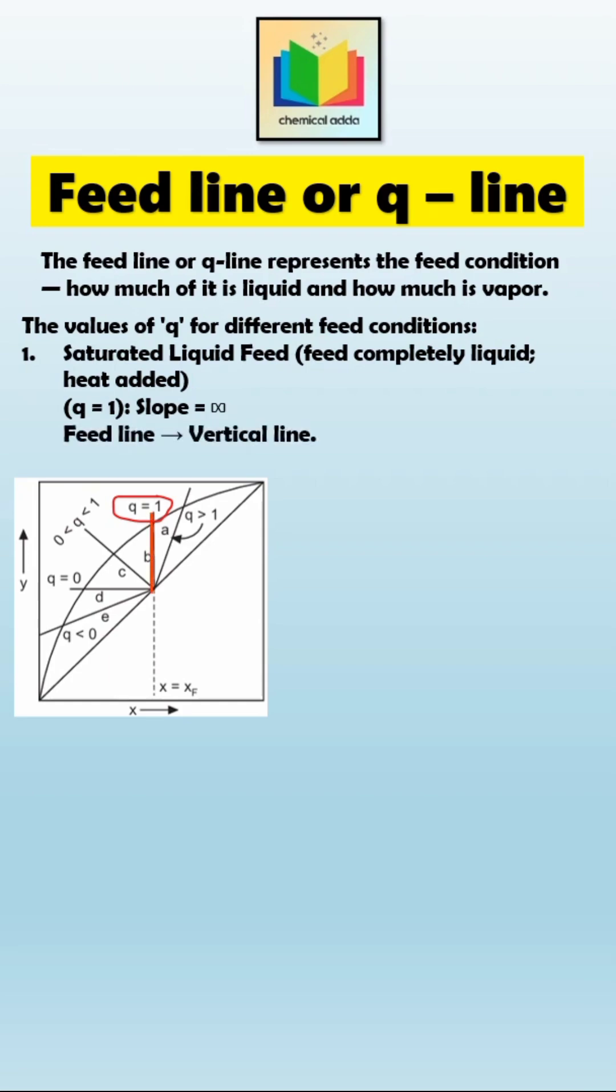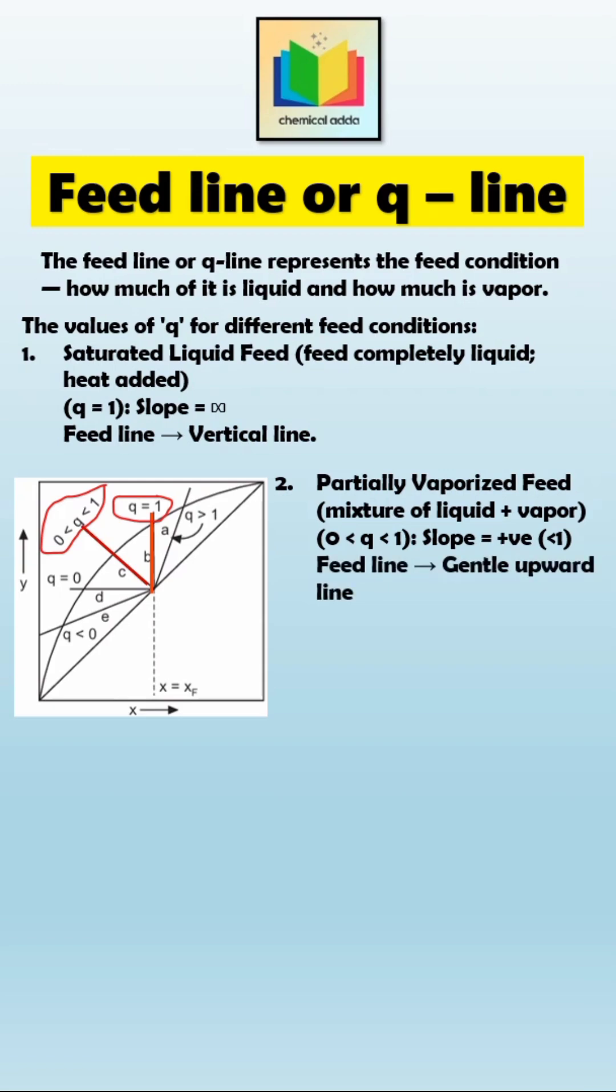Next, if the feed is partially vaporized, that means it's a mixture of liquid and vapor, not fully one or the other. Here, the value of Q is between 0 and 1. The slope in this case is positive but less than 1, so it appears as a gentle upward sloping line. This line tells us the feed is partly liquid and partly vapor.